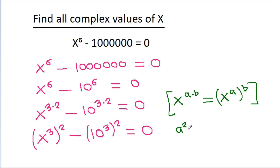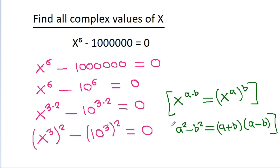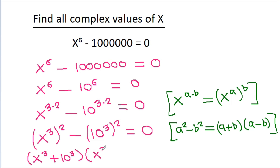Using the identity a squared minus b squared equals (a plus b)(a minus b), this becomes (x cube plus 10 cube) times (x cube minus 10 cube) equal to 0.